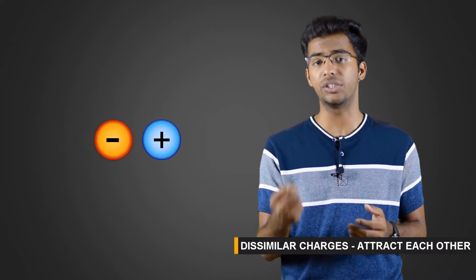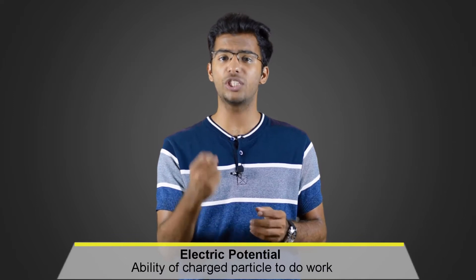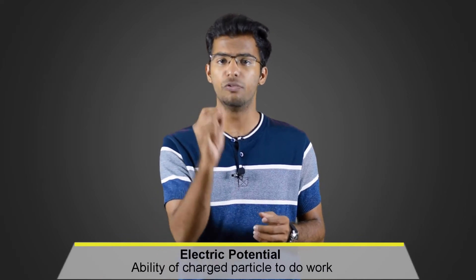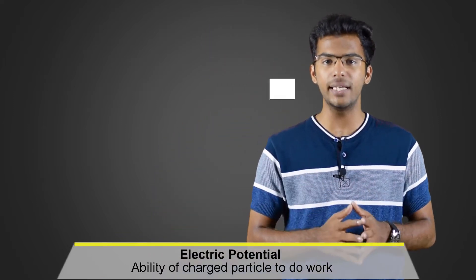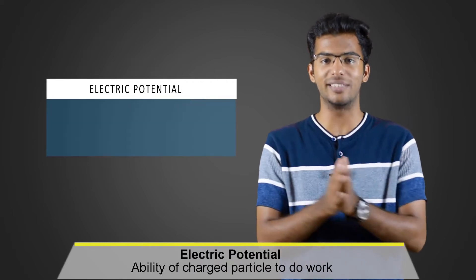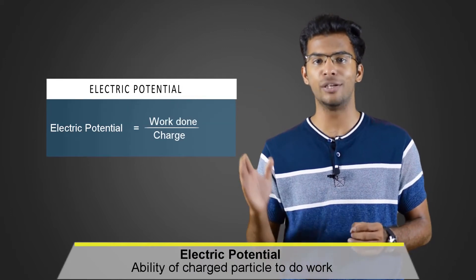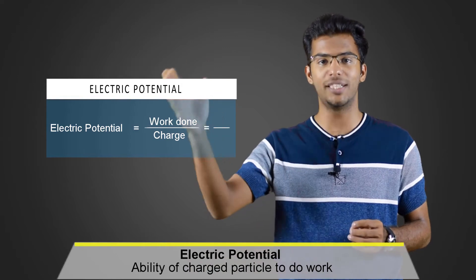This is the work done by electric charges. So we define electric potential as the ability of charged particles to do work. Mathematically, electric potential is equal to work done divided by charge, which is W by Q. This is electric potential.